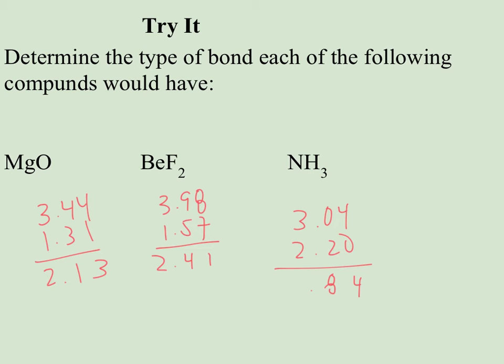Looking at the next page, we determine the type of bond for additional compounds using the electronegativity values. MgO has a difference of 2.13, making it ionic. BeF₂ — which can form an incomplete octet — also has a difference greater than 1.7, so it forms an ionic bond. NH₃ has a difference that falls between 0 and 1.7, so it forms a polar covalent bond.